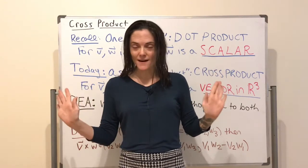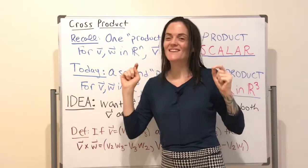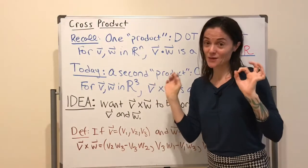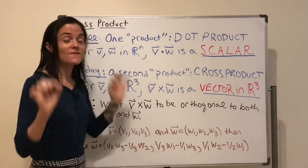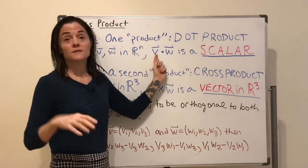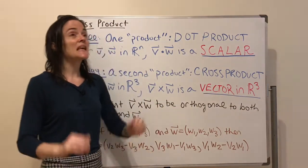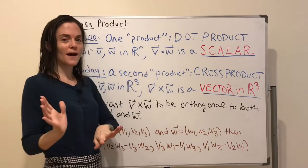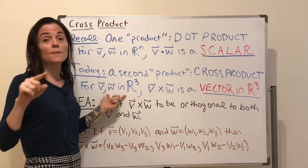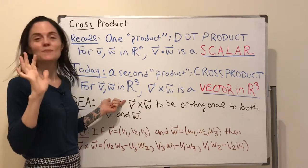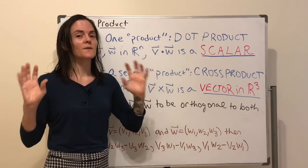Today we discuss the cross product, but let me remind you of something we did two videos ago: we defined one type of vector product called the dot product. For two vectors v and w in R^n, the dot product v·w is a scalar. Today is another vector product — it's different, it's called the cross product, and here we need v and w in R^3. Then v×w is also a vector in R^3.